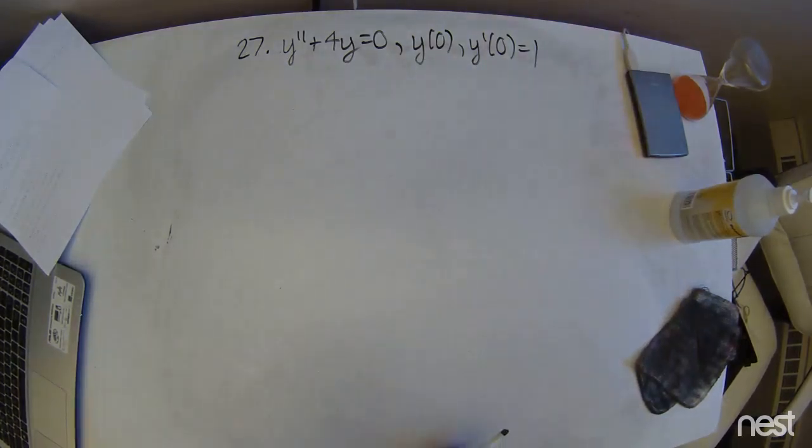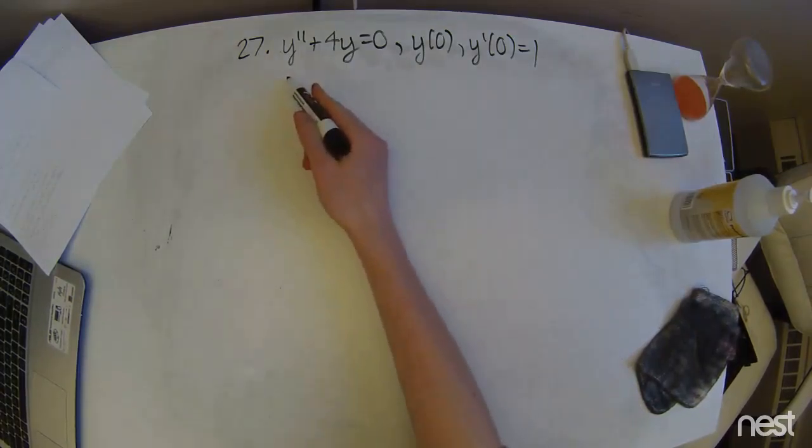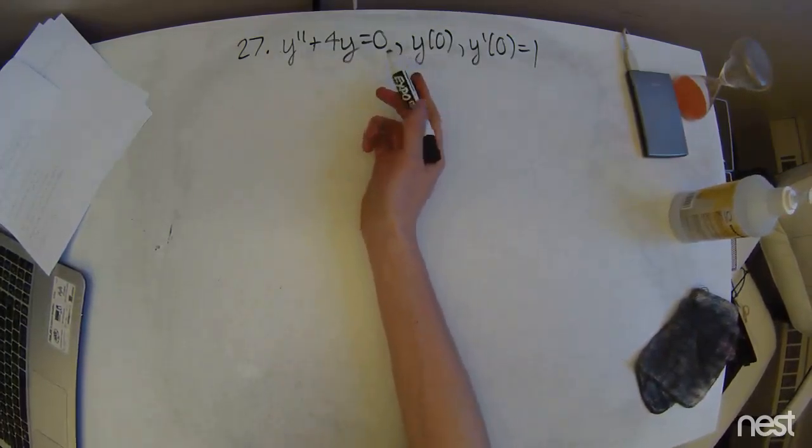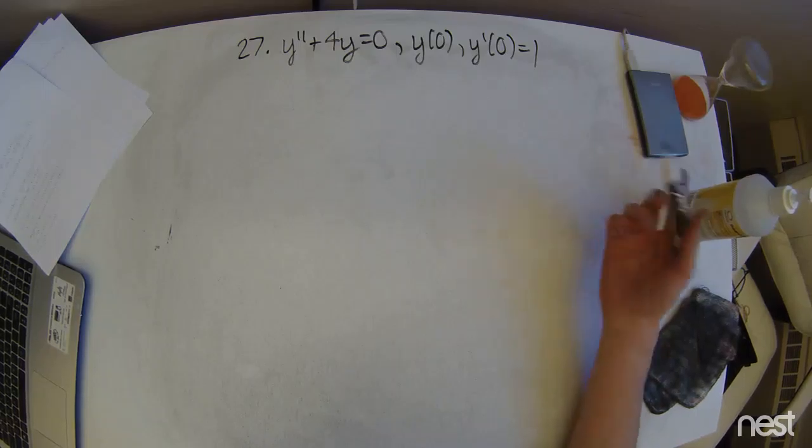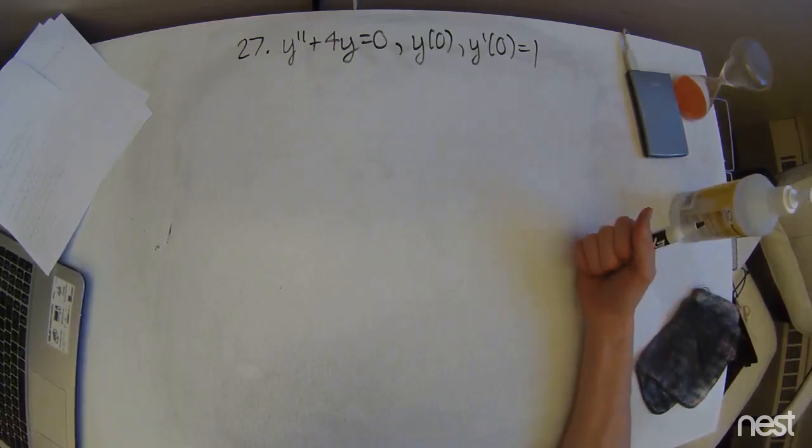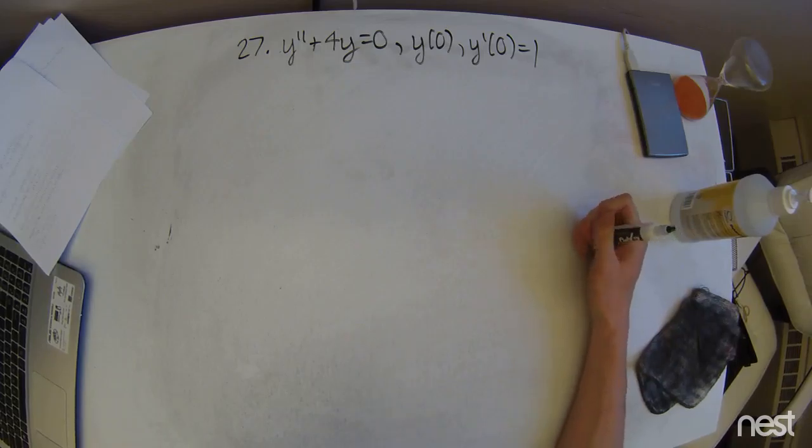All right, so problem 27 asks us to solve the second order homogeneous differential equation, which is also an initial value problem. And that, of course, makes our life very exciting.